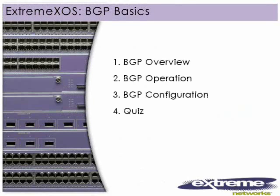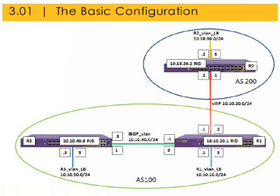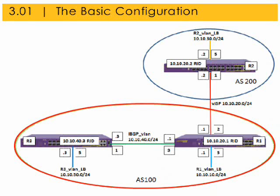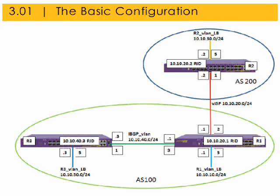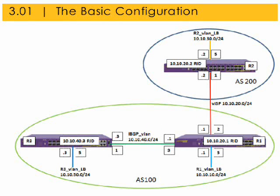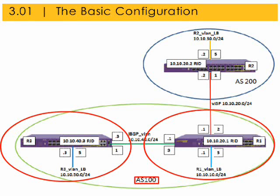The next section is BGP Configuration. The basic BGP configuration we will build contains an eBGP configuration and an iBGP configuration. We will build the external BGP eBGP configuration between R1 and R2 that are in two different autonomous systems. We will then build an internal BGP iBGP configuration between R1 and R3 that are in the same autonomous system.